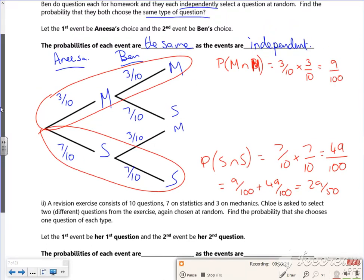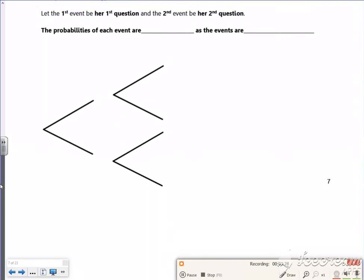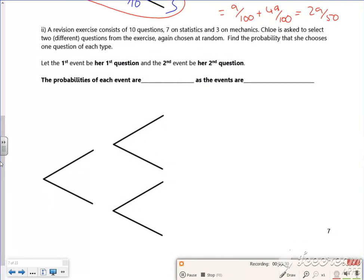There, that's alright. They're independent. Right, so this one mustn't be independent. So let's have a look at this one then. So it says 10 questions, 7 stats, 3 mechanics. Chloe's asked to select two different questions. So what I've got here now is Chloe's first question and Chloe's second question.